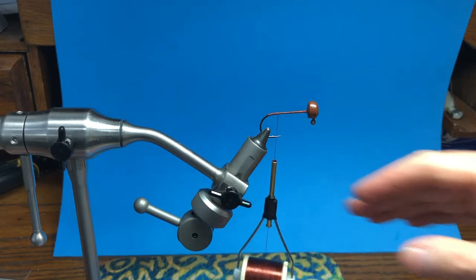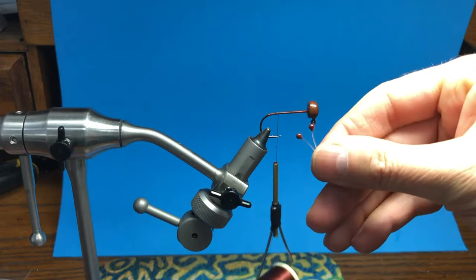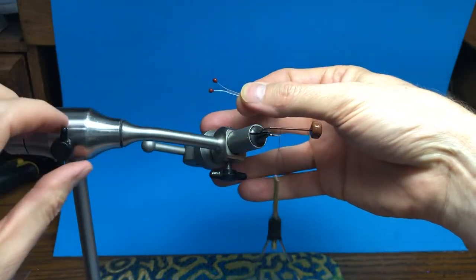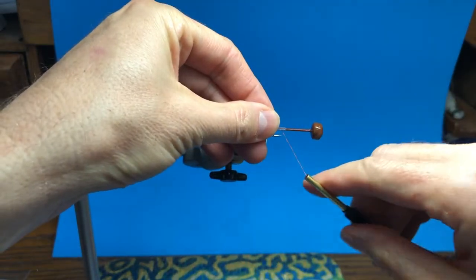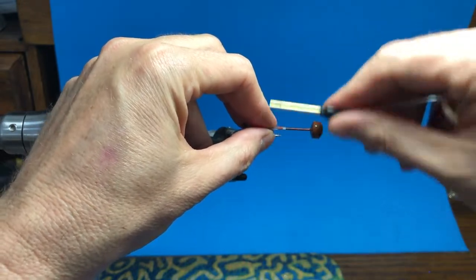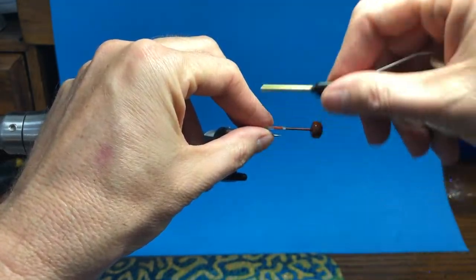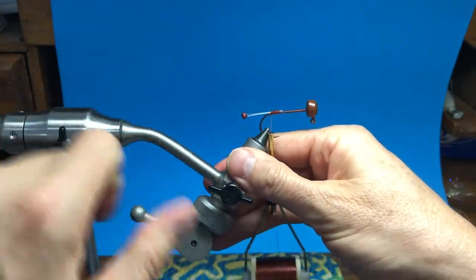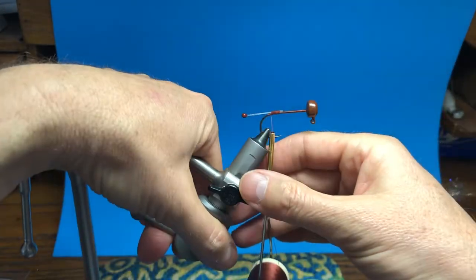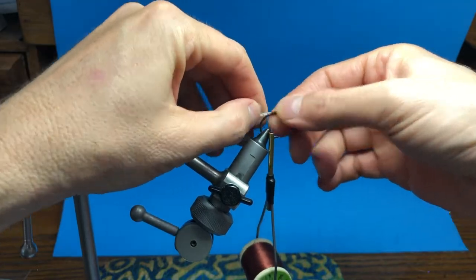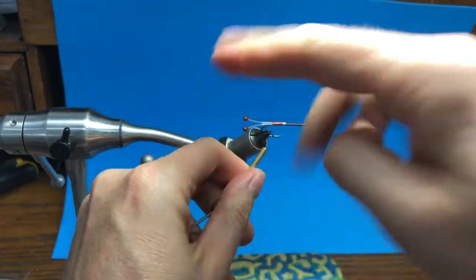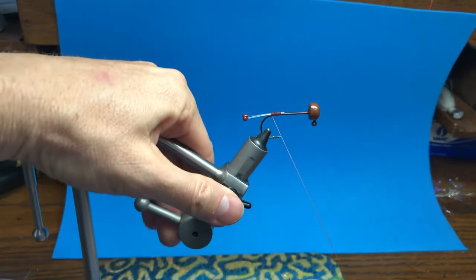The first thing we're gonna tie in are easy shrimp eyes in mahogany brown. These things were a revelation when I found them - they're from Denmark of all places. It's so easy to add eyes to a shrimp or crab pattern. You're tying in one post with ridges on one side so it ties in really nicely. Make sure it's centered and tie it in even with the hook point.